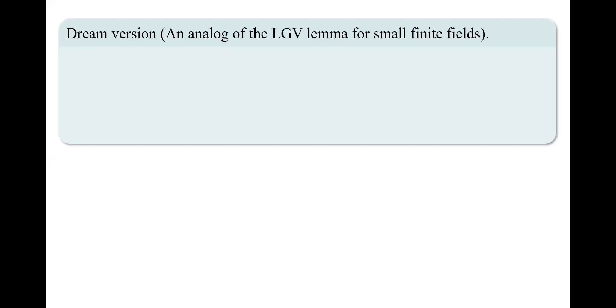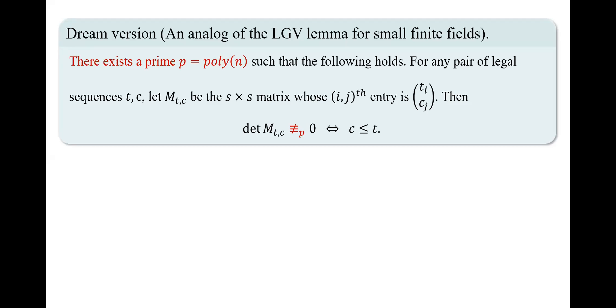For this task, we need an analog of the LGB lemma for small finite fields. This is the same lemma as presented before. The only difference is that here we require the existence of a prime p that is polynomial in n, and that the determinant of M_t_c does not vanish modulo that prime. However, we believe there is no such analog, and we provide heuristic and computational evidence to support this intuition.